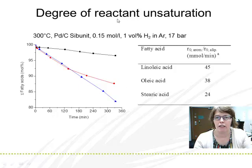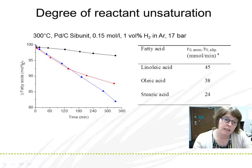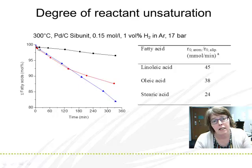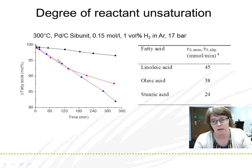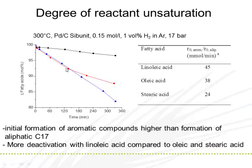We then wanted to study the effect of reactant unsaturation. Linoleic acid, oleic acid, and stearic acid were studied. Linoleic acid contains two ethylenic double bonds. As you can see in the plot — fatty acid molar fraction as a function of time — initial rates were about the same, but catalyst deactivation was very rapid after 10 minutes reaction time with linoleic acid, whereas the most tolerant conditions were with stearic acid and oleic acid. So more deactivation occurs with linoleic acid as a feedstock.